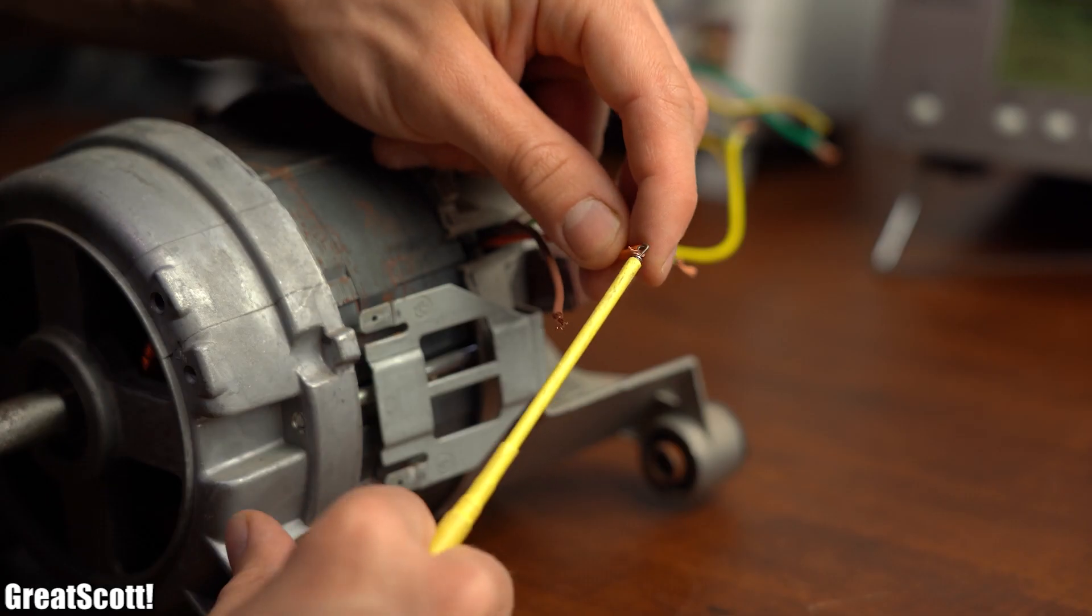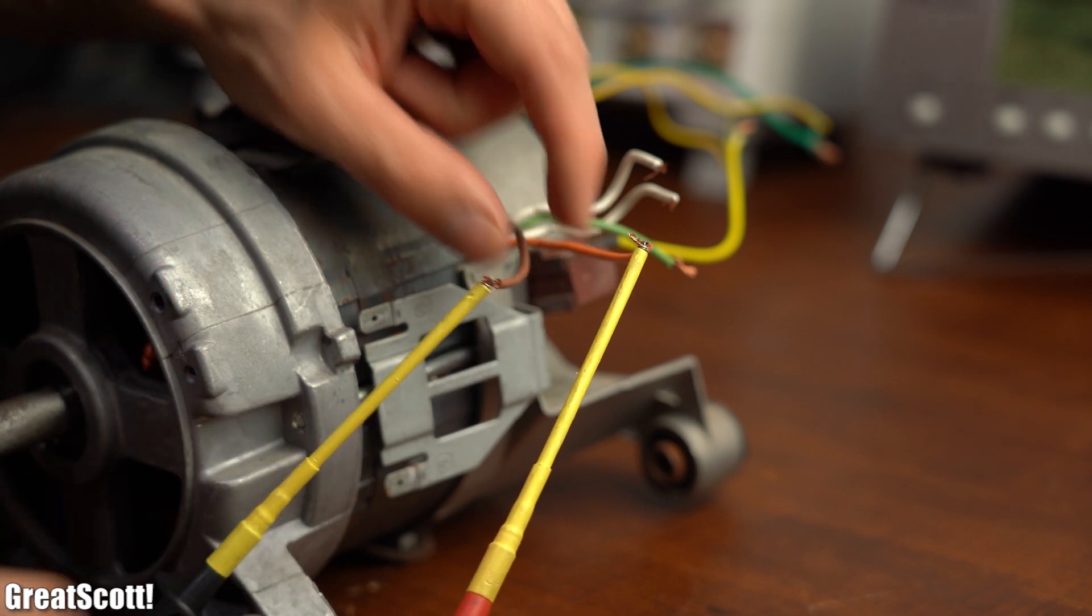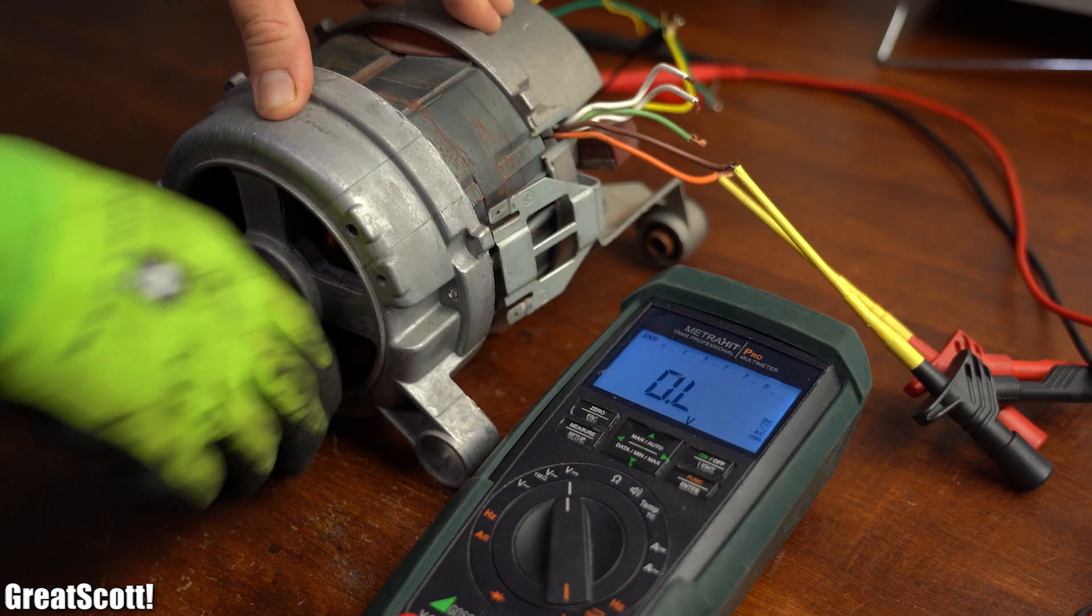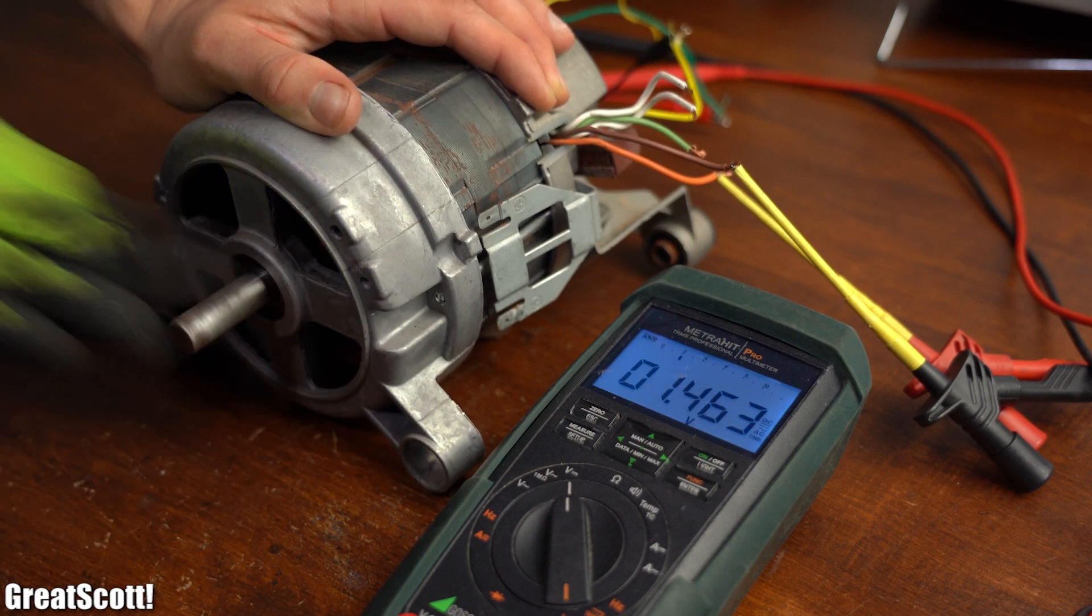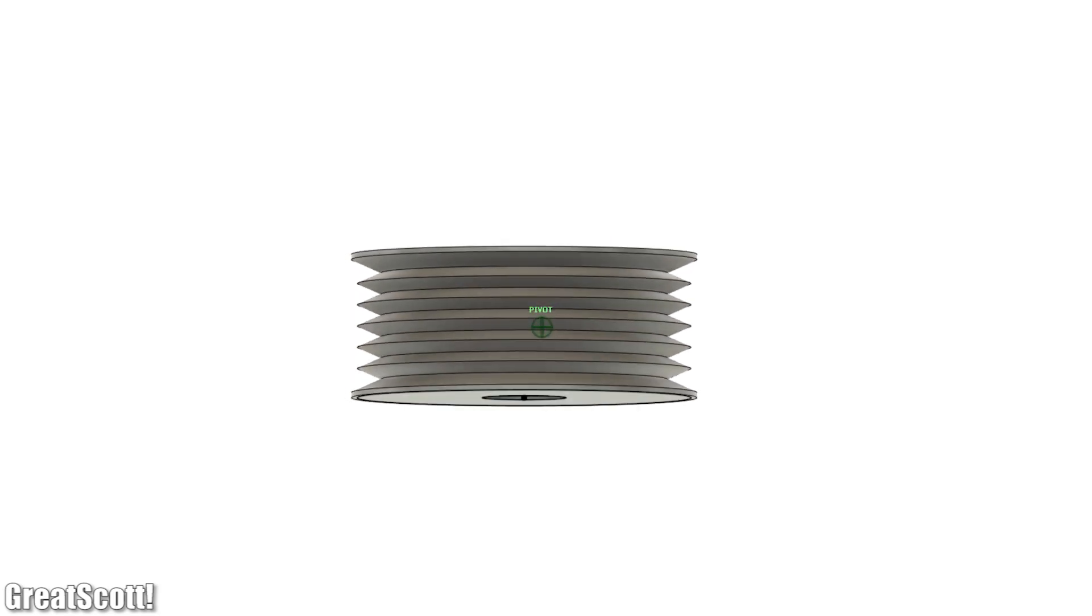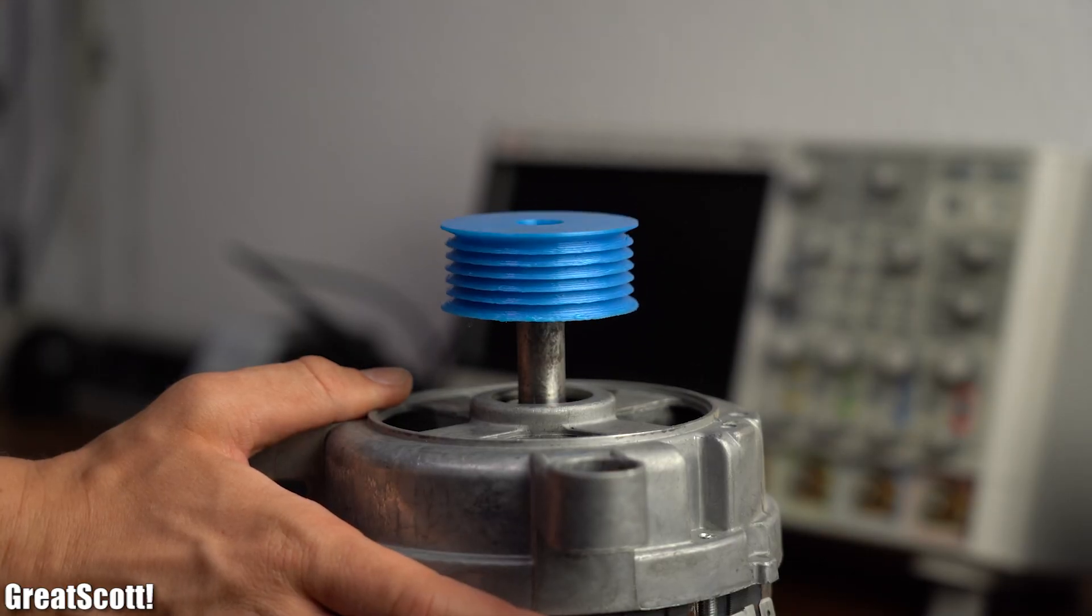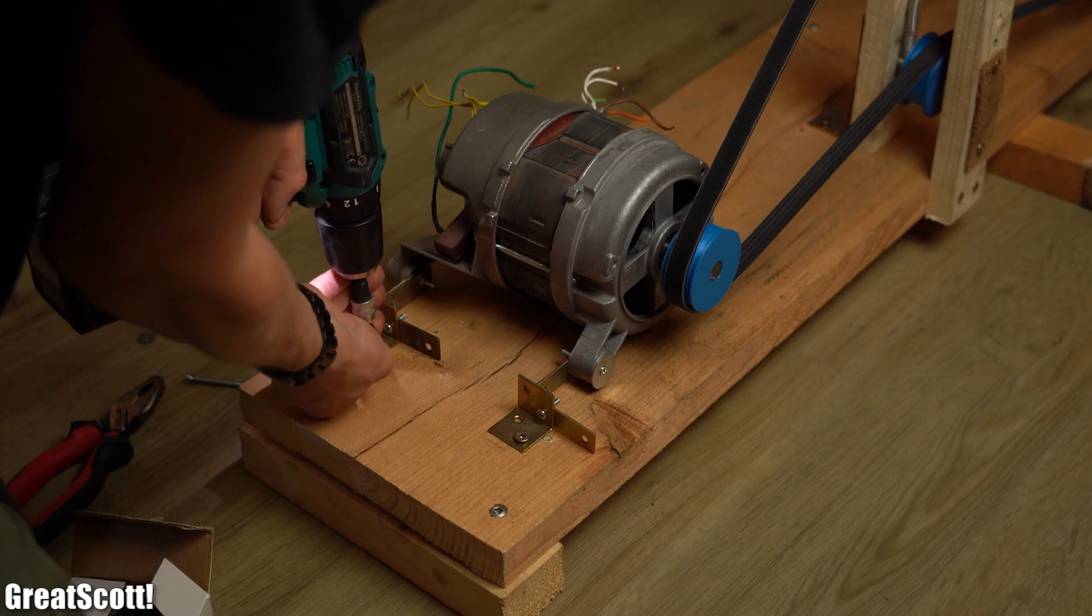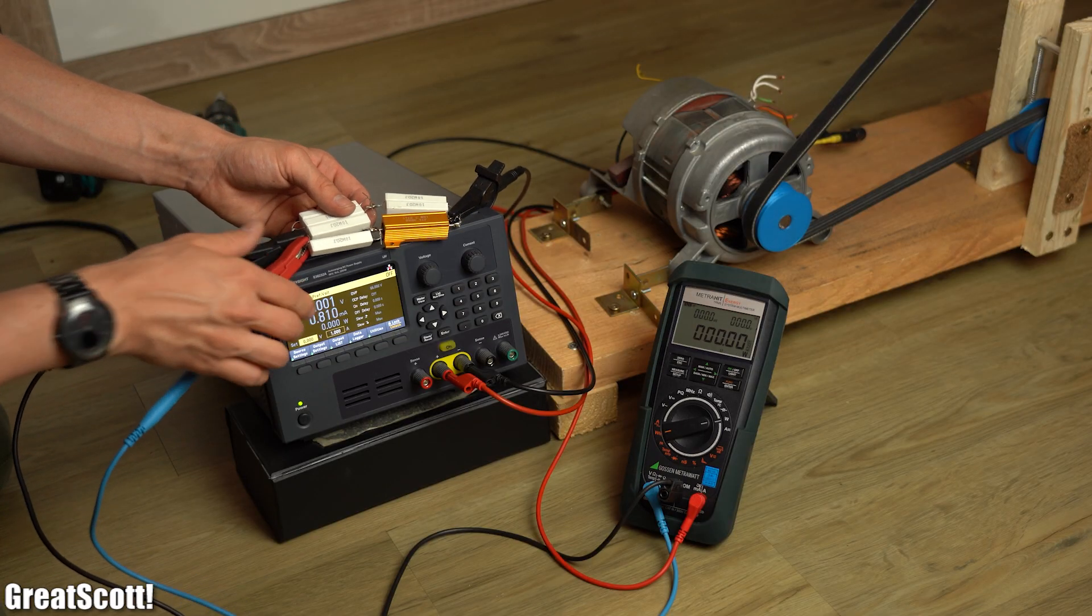But anyway, by powering the exciter coil just like we did with the alternator, we should be able to generate an output voltage at the rotor, which as you can see here is true. So let's design a fitting pulley for the motor in Fusion 360, 3D print it and hammer it into position in order to strap this motor to my bicycle system to find out what it is capable of outputting.